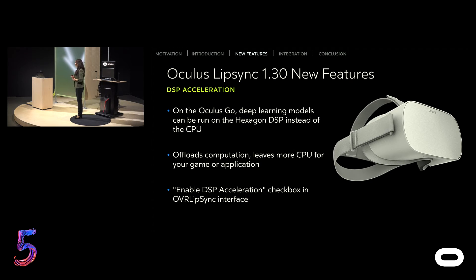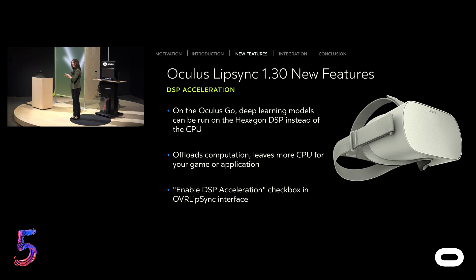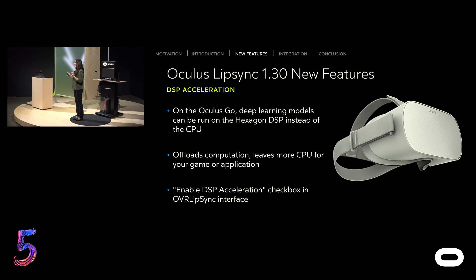With the 1.30 release, we are also giving you DSP acceleration. Where applicable, you can offload computation of the deep learning models to DSP on supported platforms, and it will run on Hexagon DSP from Qualcomm instead of the CPU. That will give you more CPU cycles for your application or games. To use this feature, click on the Enable DSP Acceleration checkbox in your interface.